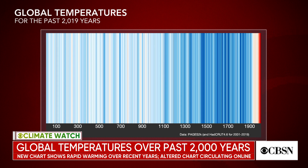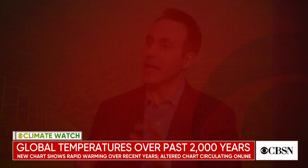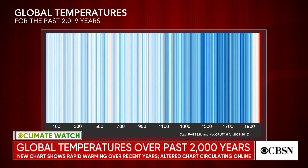It was created by climate scientist Ed Hawkins. So I spoke with CBS News meteorologist and climate specialist Jeff Berardelli, and he explained what exactly the chart shows. What you're looking at is over 2,000 stripes, and each stripe indicates a year. The blue stripes indicate temperatures below the 20th century average, and the red stripes indicate temperatures above the 20th century average. Look at that spike and sea of red at the very end — it shows just how abnormal recent warming is over the past few decades.